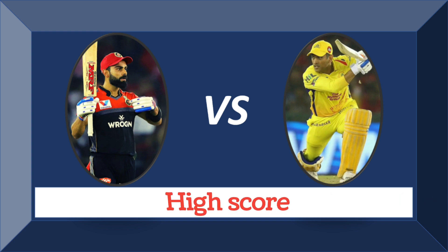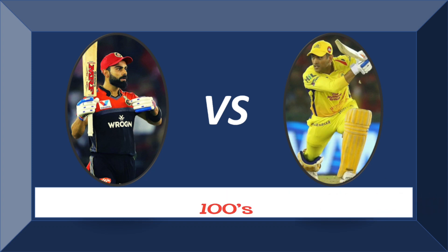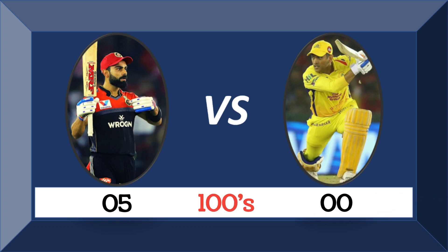High score: Kohli's high score is 113 runs, Dhoni's high score is 84 runs. Total centuries: Kohli has 5 centuries, Dhoni has 0 centuries.